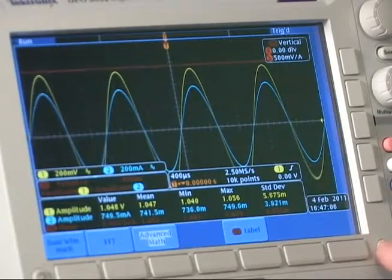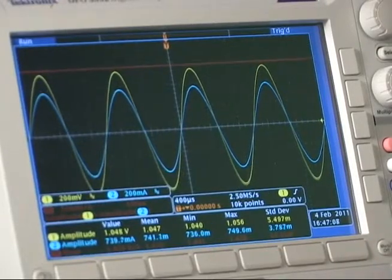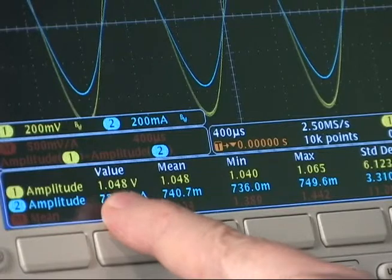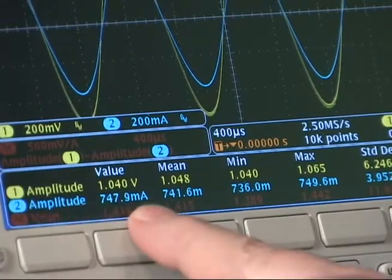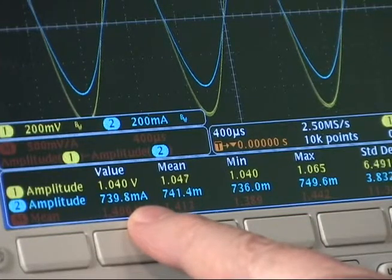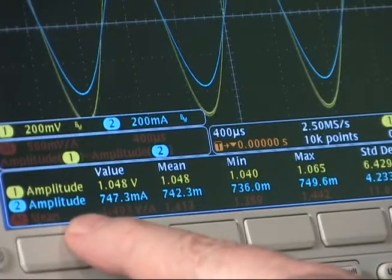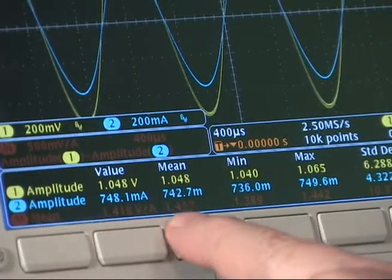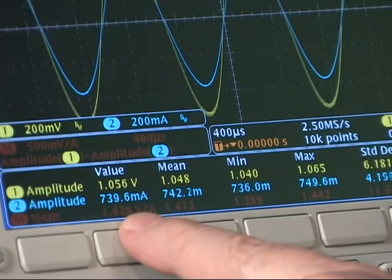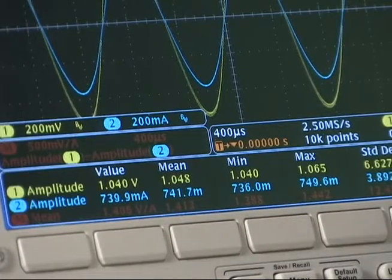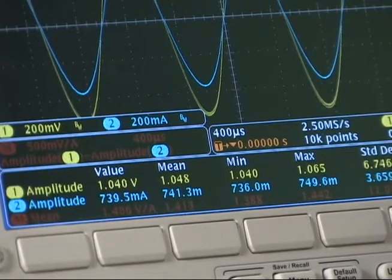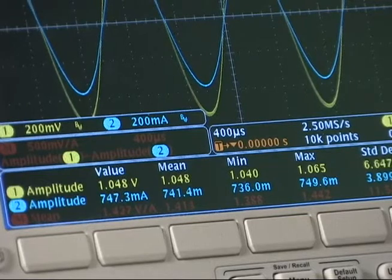And we'll clear the menus so we can see the results. Now we see that the amplitude of the voltage is about one volt. The amplitude of the current is about 740 milliamps. And the impedance is calculated by dividing the volts by the amps. And the mean is about 1.4 volt divided by amps, which is 1.4 ohms. That's the output impedance of this amplifier on that output tap at 1 kilohertz.